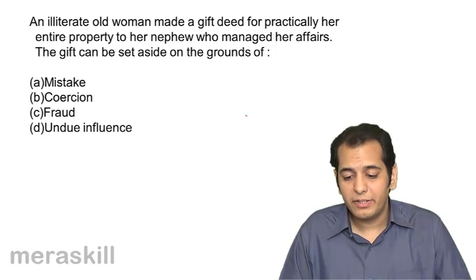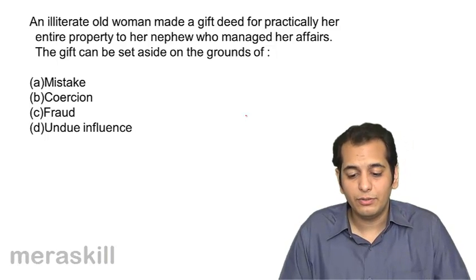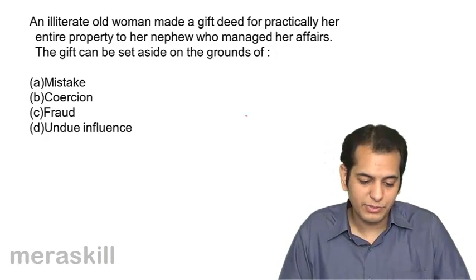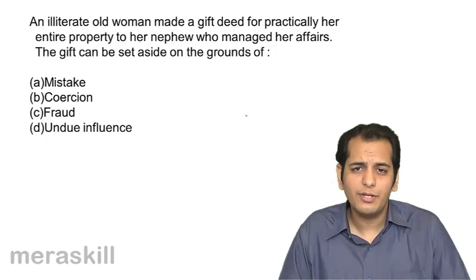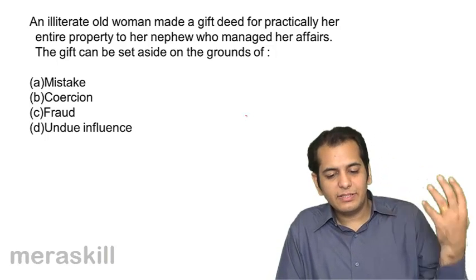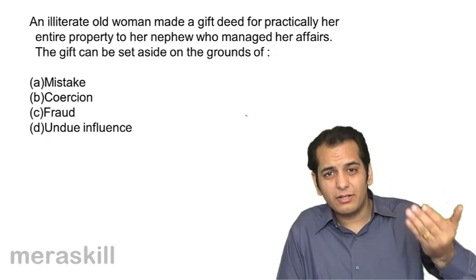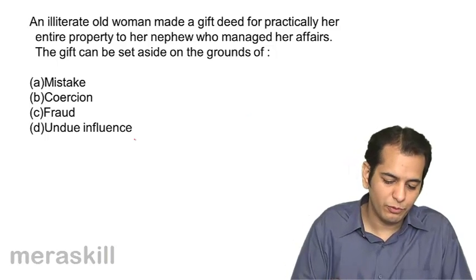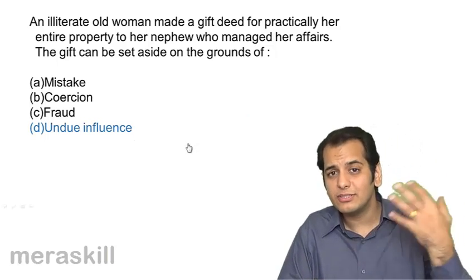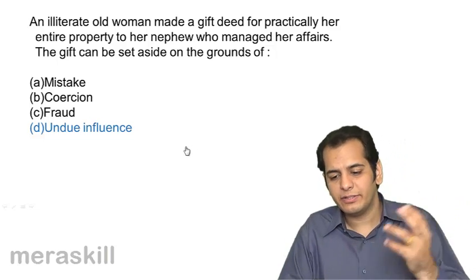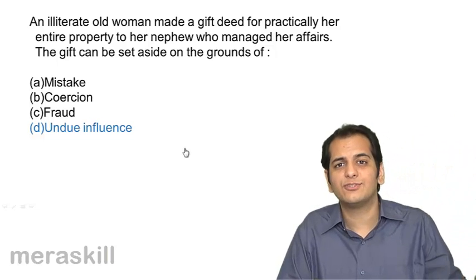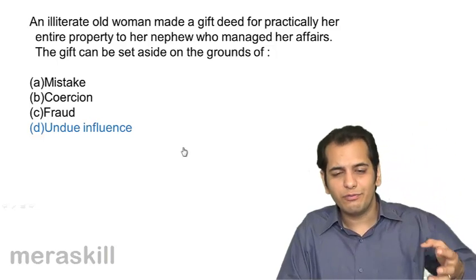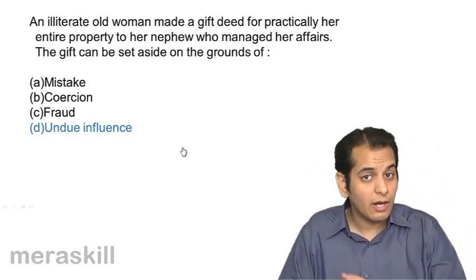An illiterate old woman made a gift deed for practically her entire property to her nephew who managed her affairs. The gift can be set aside on the grounds of: A mistake, B coercion, C fraud, D undue influence. It is undue influence — the nephew would have influenced her to make a gift deed in his name. A relationship exists, and he is managing her affairs. Even if undue influence may not actually be present, it will be assumed, and the nephew must prove it is not present.